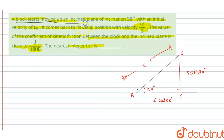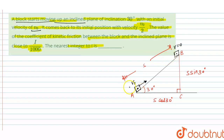A block starts moving up the inclined plane with initial velocity v0. When the block reaches the topmost position, the velocity is zero. When it comes back down to the initial position, the velocity is v0/2.